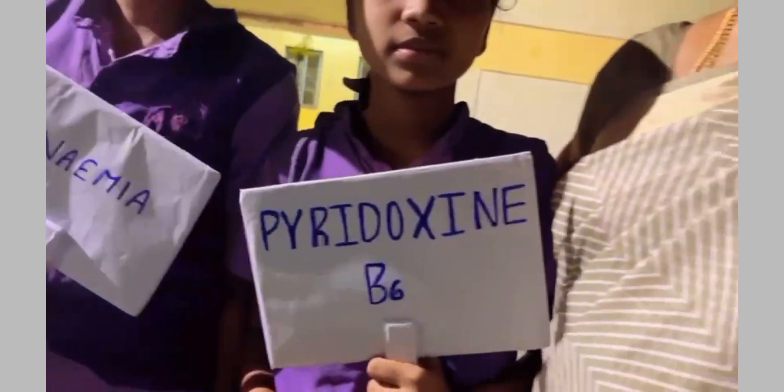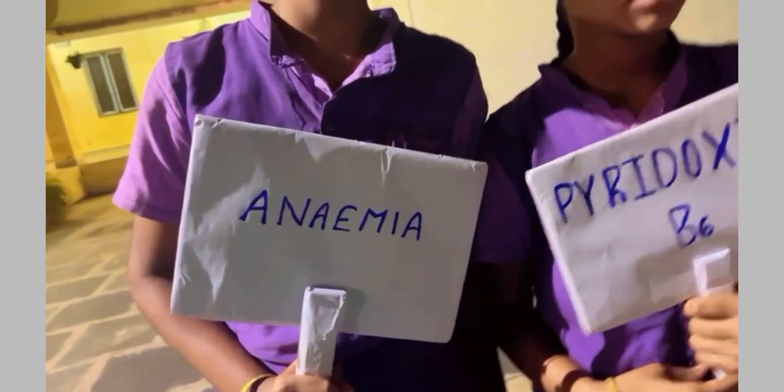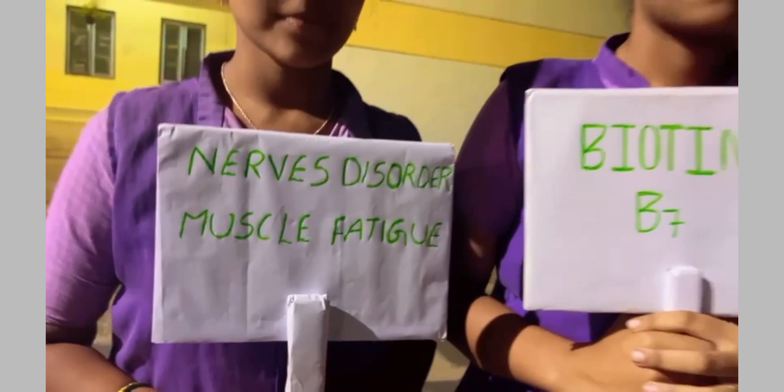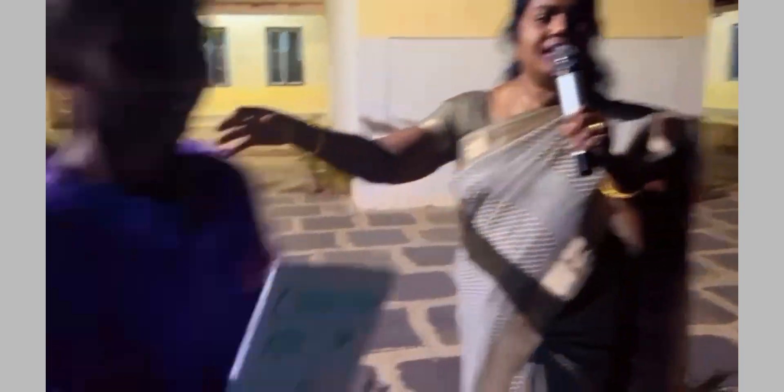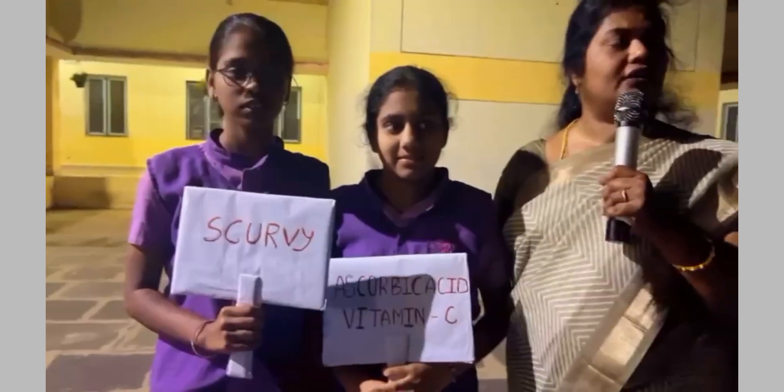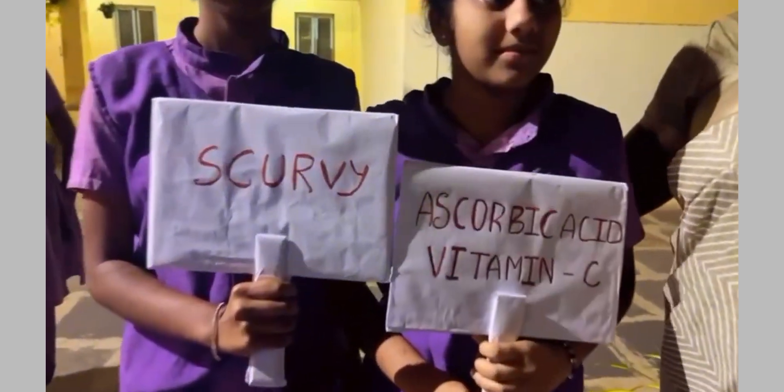Next B6 — chemical name is pyridoxine, and deficiency is anemia. And next B7 — biotin, and deficiency is nervous disorder and muscle fatigue. Next: B12 — cyanocobalamin. And Vitamin C — chemical name ascorbic acid, and deficiency is scurvy.